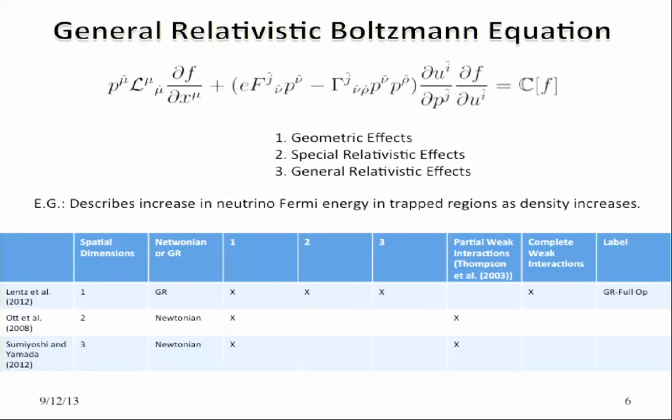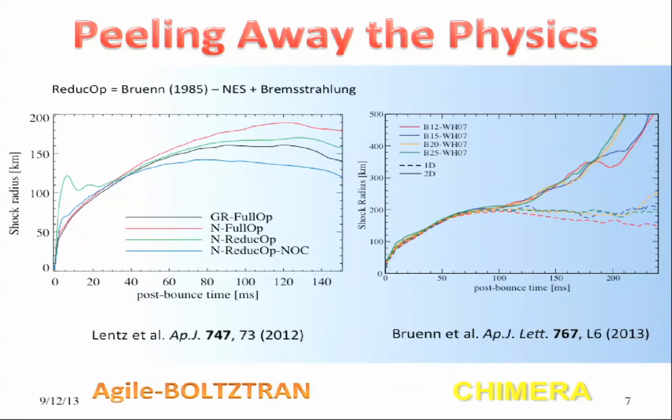And in the beautiful work, recent work by Sumi, who will talk about this later today for sure, Sumiyoshi and Yamada, this is now done in three dimensions. But again, it's Newtonian. It involves the geometric effects, but it neglects the special and general relativistic effects. And again, it's a truncated weak interaction set. So you can see the general trend here, particularly with regard to the weak interactions, and I'll show you why that is, is to move toward truncating some of the physics. And that's fine. These are important steps forward. And from a practical standpoint, this has to be done now. But let me show you that at the end of the day, we can't do that.